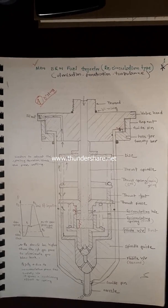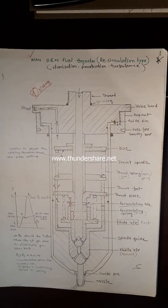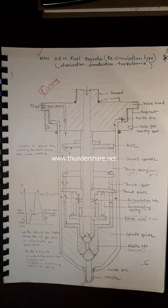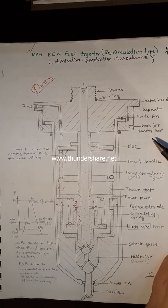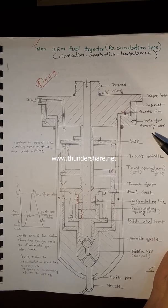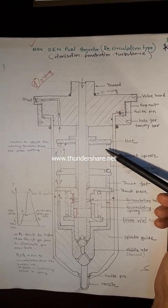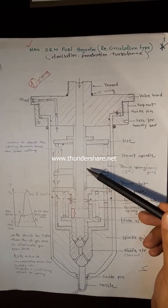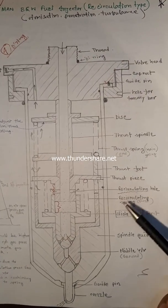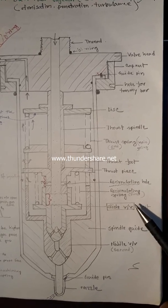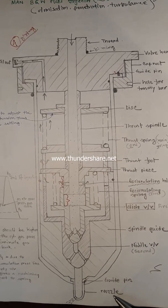Here we have the main BMW fuel injector cross-section. The parts' names define their functions: we have the valve head, cap nut, guide pin, and hole for a Tommy bar — with that we can retighten the injector after setting with correct torque pressure. We have the disc under which we can adjust the spring pressure for the correct pressure setting, the thrust spindle, thrust spring (which is the main spring), thrust foot, thrust piece, recirculation hole, recirculation spring, slide valve, spindle guide, needle valve guide pin, and lastly the nozzle itself.